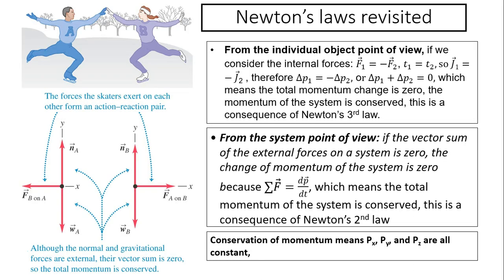Let's take a look at the situation of two skaters pushing off each other. The force the skaters exert on each other forms an action-reaction pair. That means they are equal in magnitude and opposite in direction. Here is the free body diagram on A, and here is the free body diagram on B. The net force on A is from B, and the net force on B is from A — they are equal and opposite. From the individual object point of view, considering the internal force, F1 equals negative F2, so the force on A equals negative force on B.